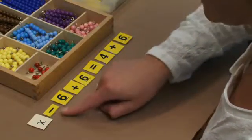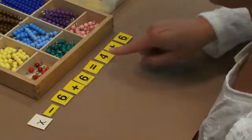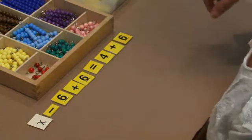Adding 6 on this side is going to cross out our subtraction of 6 here. When we add 6 on this side, it's going to equal 10.